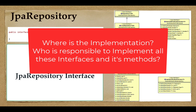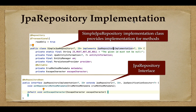You may have a question: where is the implementation — who implements all these repository interfaces and their methods? Spring Data JPA is responsible for implementing all these methods. Spring Data JPA provides the SimpleJpaRepository class, which implements all the important methods of JpaRepository. SimpleJpaRepository is basically the default implementation class of JpaRepository, and it provides transaction management for all its implementation methods.